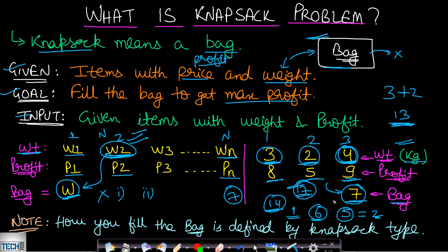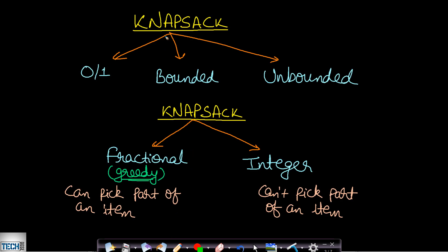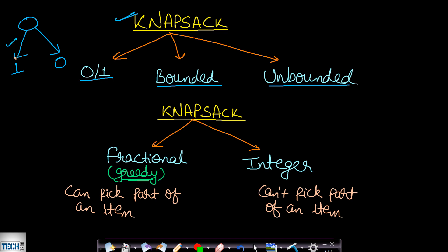The way you fill the bag is defined by the knapsack type. Knapsack can be classified into three types: 01 knapsack, bounded knapsack, and unbounded knapsack. In a 01 knapsack, an item can either be included or excluded. If included, exactly one instance is placed in the bag; multiple instances of the same item are not allowed.